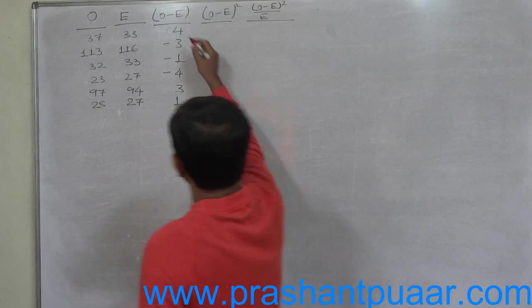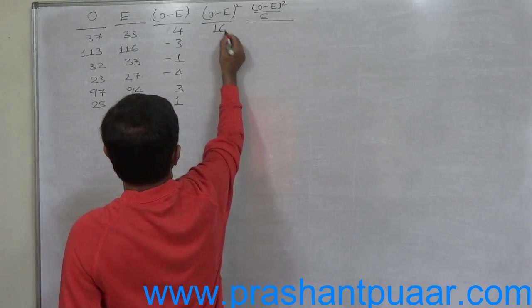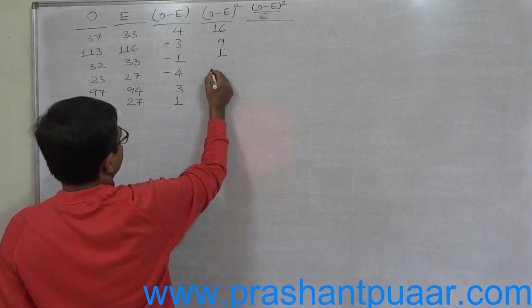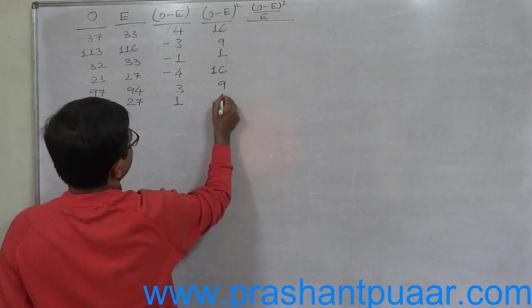Now, O minus E whole square: 4 square is 16, 3 square is 9, 1 square is 1, 4 square is 16, 3 square is 9, and 1 square is 1.